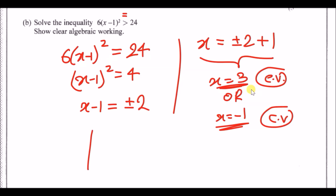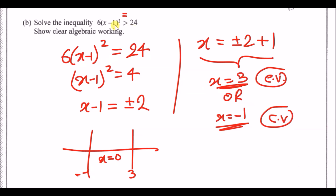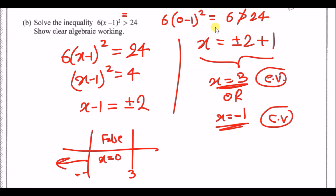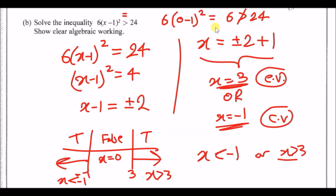Place the critical values −1 and 3 in ascending order and test a value between them. Try x = 0: 6(0 − 1)² = 6, which is not greater than 24, so the region between −1 and 3 is false. That means the inequality is satisfied outside this interval. The solution is x < −1 or x > 3.